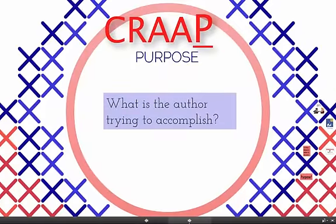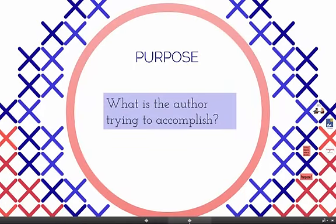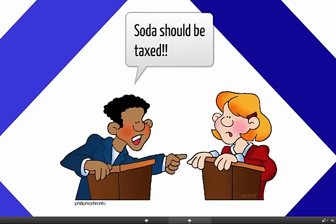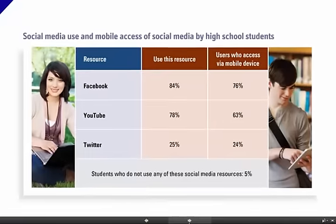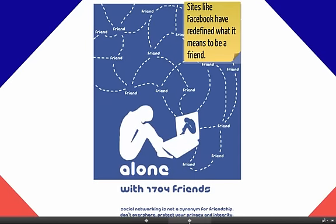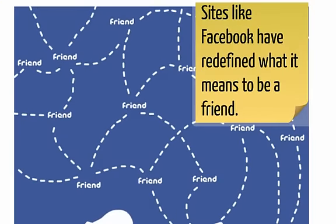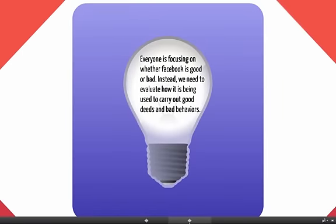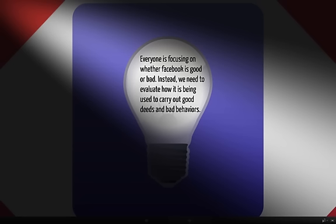The P is for purpose. What is the source trying to accomplish? For instance, is the source trying to persuade you to tax soda because of the nation's obesity crisis? Is the author trying to share a unique perspective or belief, like social media literacy is important to college students? Is the author trying to define or redefine popular terms, like sites like Facebook have redefined what it means to be a friend? Is the author trying to shed light on an issue that has been ignored or neglected, like everyone is focusing on whether Facebook is good or bad? Instead, we need to evaluate how it is being used to carry out good deeds and bad behaviors.